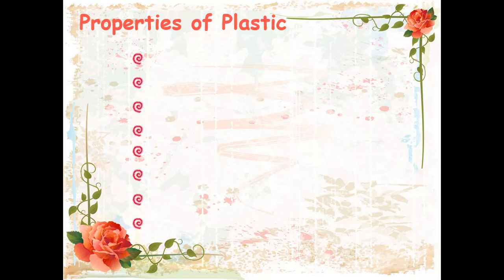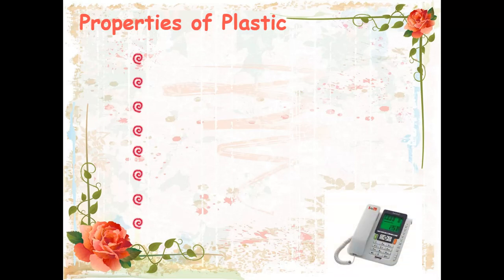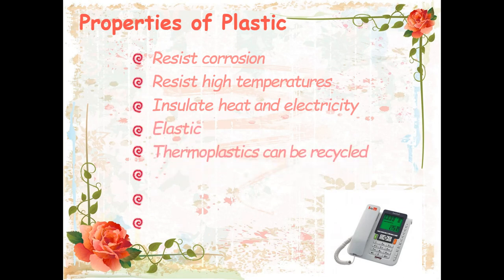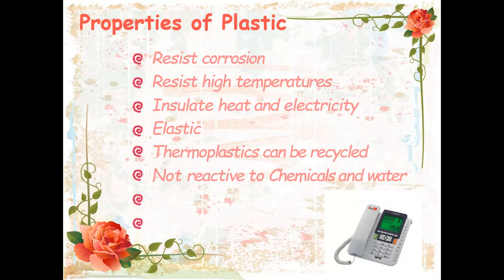What are the basic properties of plastics? First, they are resistant to corrosion. Second, they are resistant to high temperatures — like thermosetting plastics. Third, they are the best insulators of heat and electricity. Fourth, they are elastic. Fifth, thermoplastics can be recycled but thermosetting plastics cannot be recycled. Sixth, they are not reactive to chemicals and water — if you store cold drinks inside a plastic bottle, it will never react with the compound or water. That is why plastics are so commonly used.